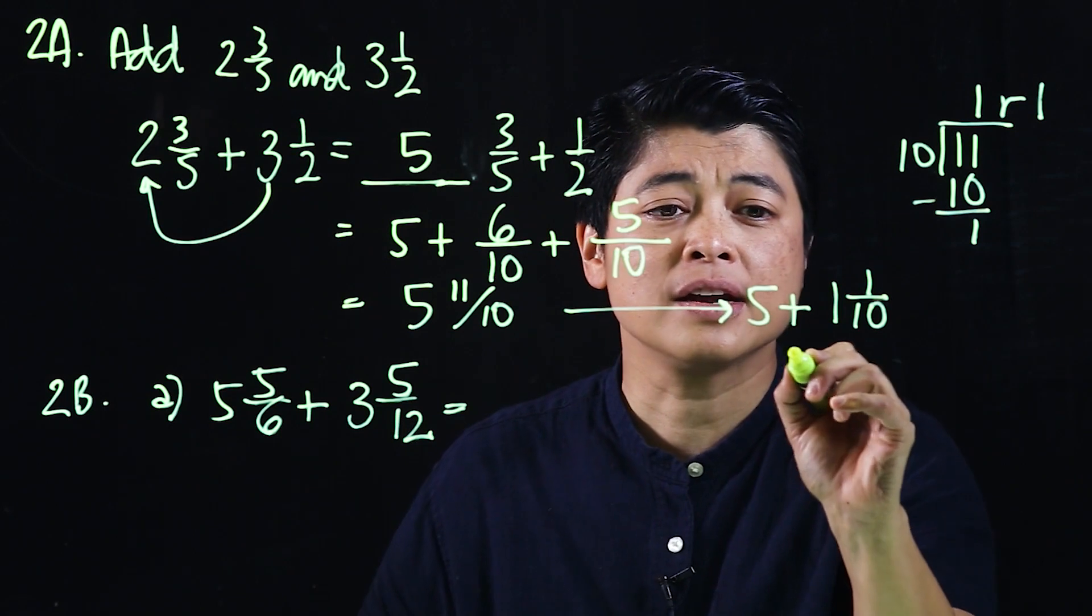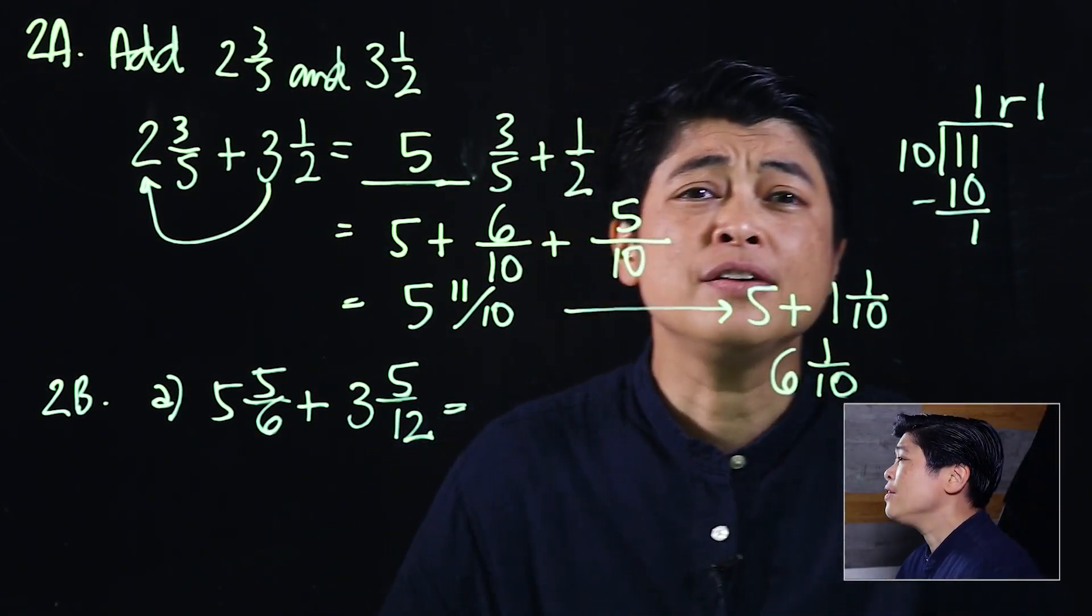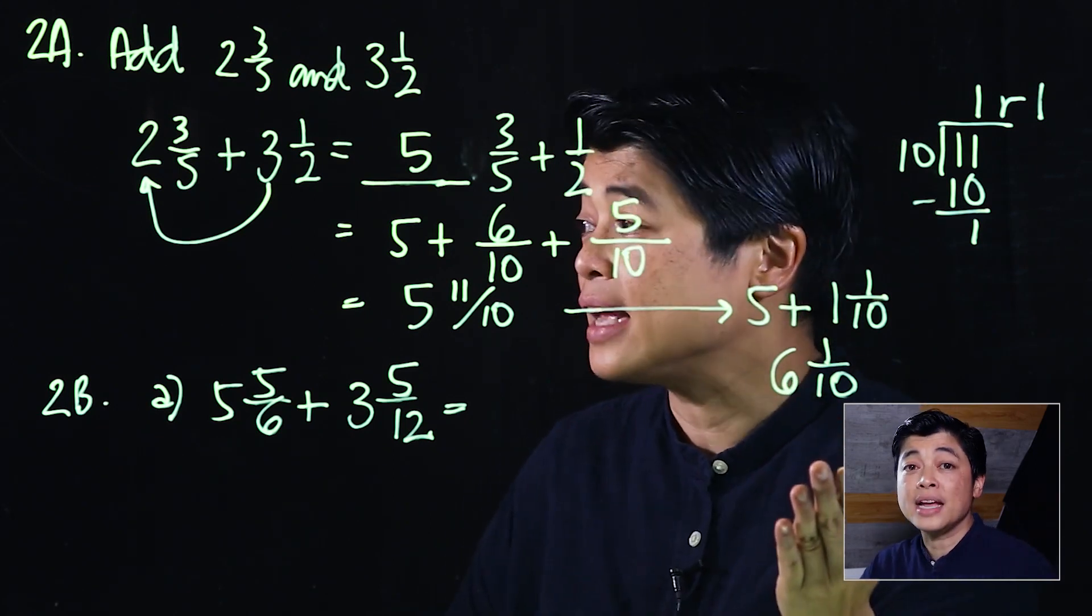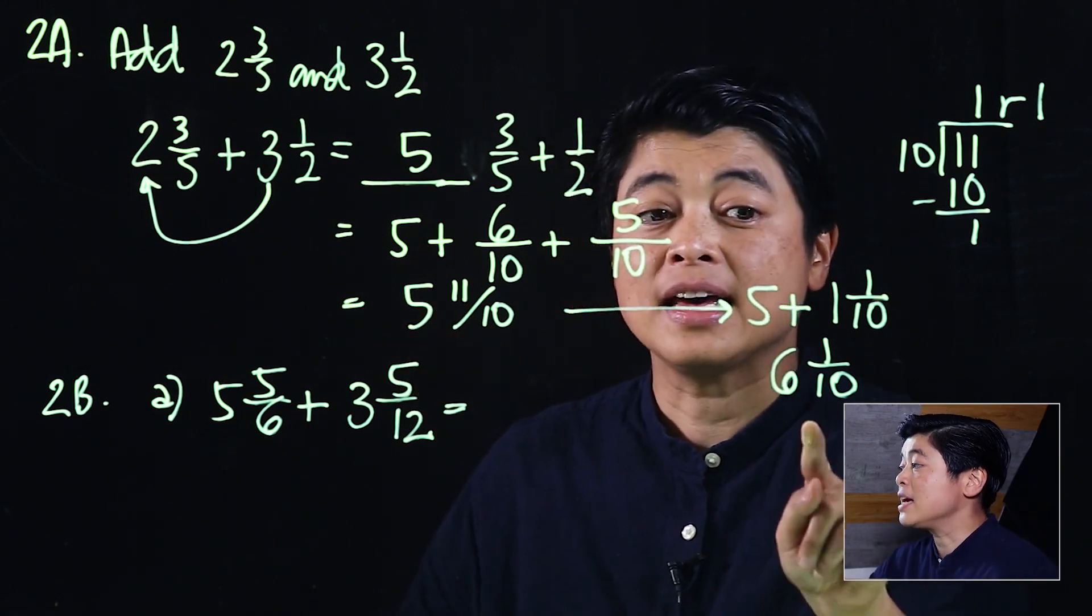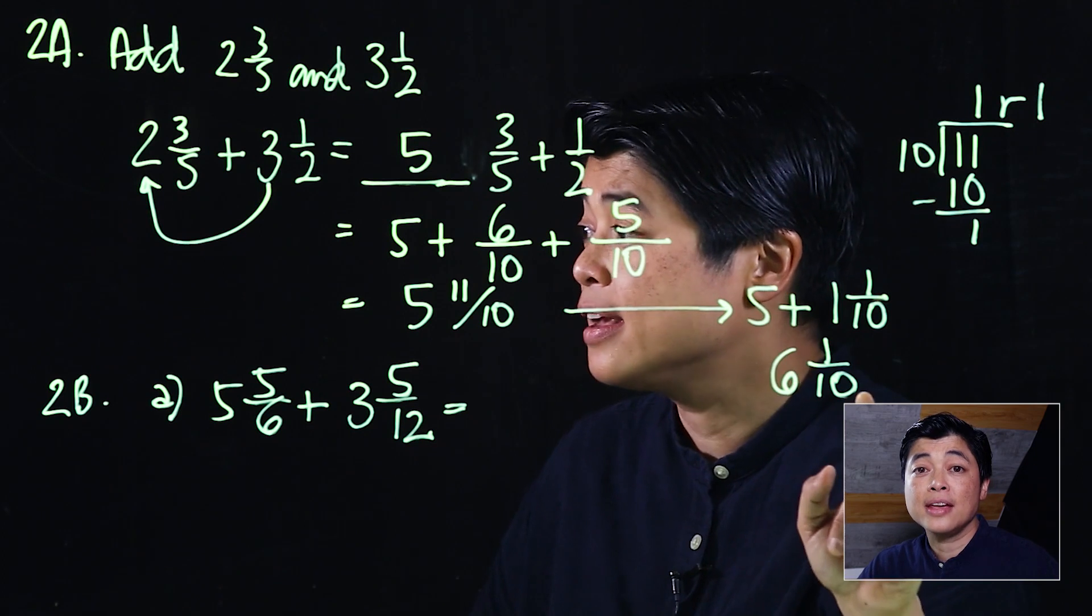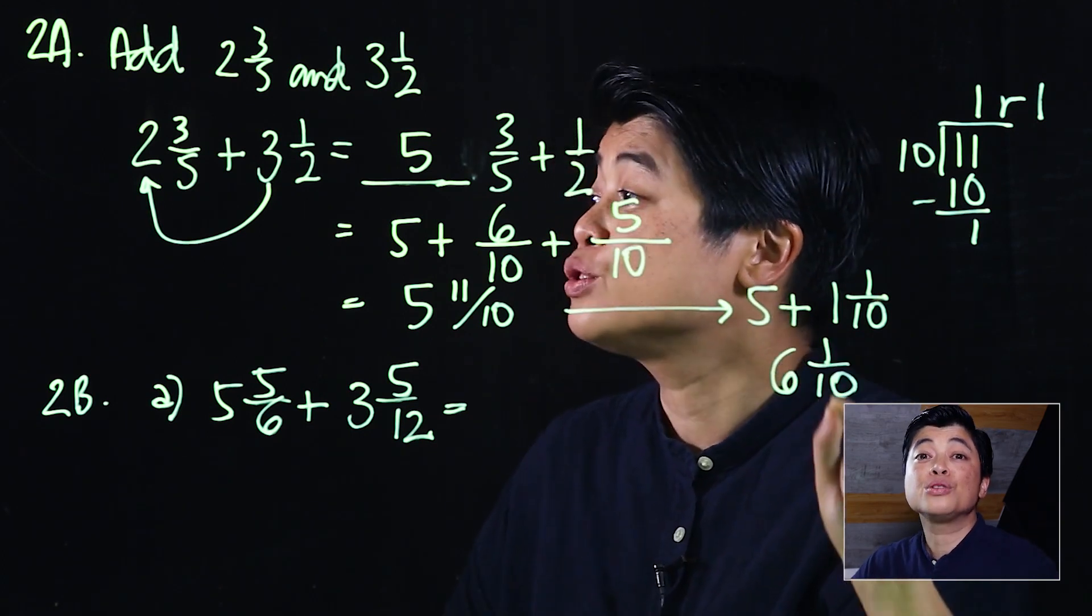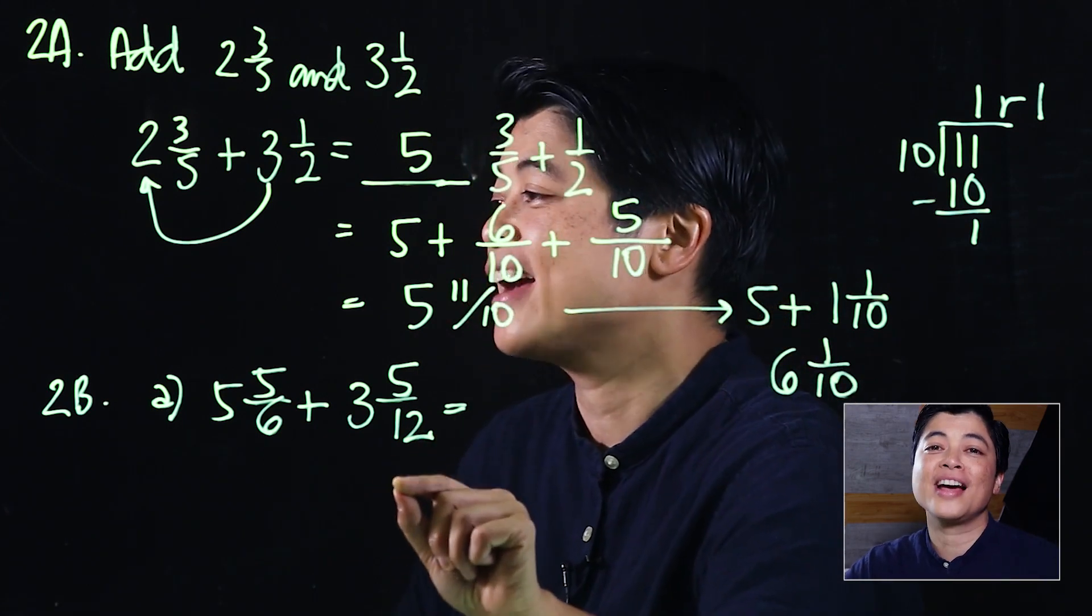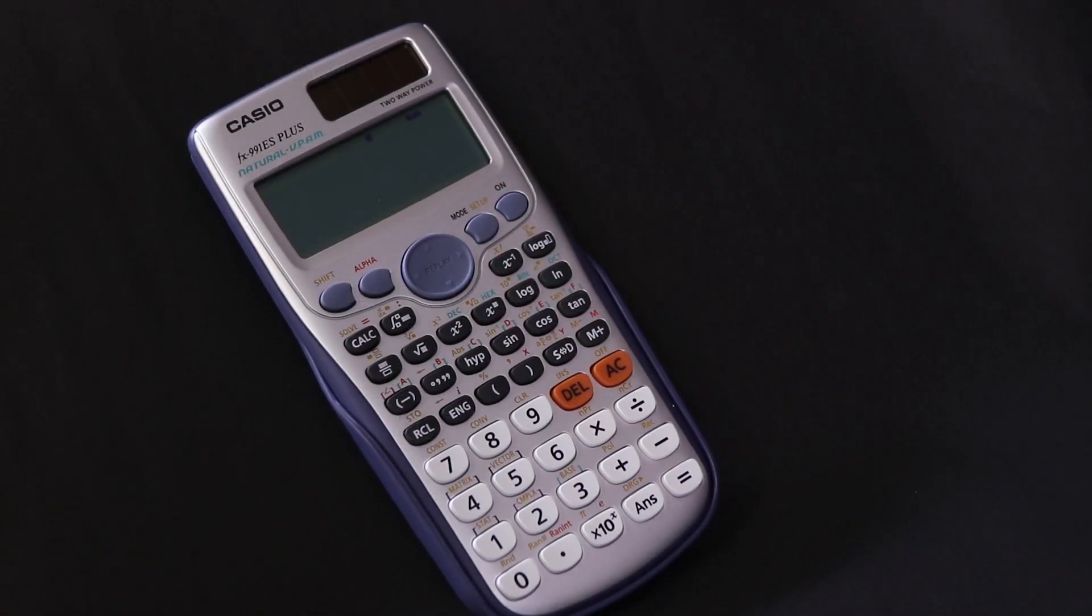If we use our calculator to confirm that we got this right, when we type as we see, we will see that the final answer will give us 6 and 1/10. So I shall show how to use the calculator to check if we got this right and do another problem with the calculator as well.